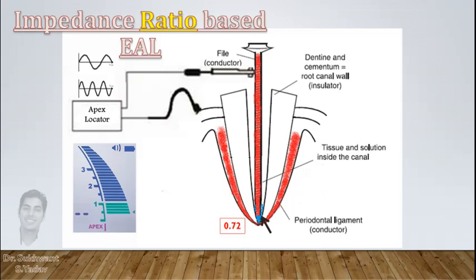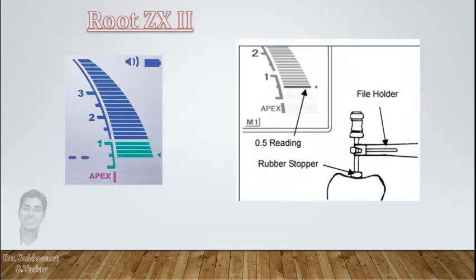Impedance value can differ in different canal contents but ratio remains always same. So Root ZX2, which is third generation apex locator, measures impedance ratio at apical constriction which indicates 0.5 mark on screen, and when file reaches apex and meets the PDL, apex flashes on screen.